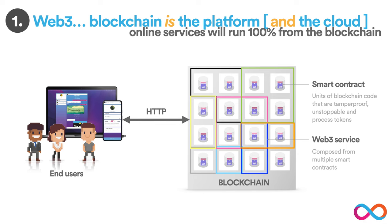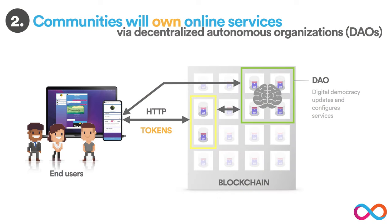Users are directly interacting on their phones or laptops with the smart contracts hosted by the blockchain over HTTP — which, of course, is very apt because this, after all, is Web3. The second important aspect of Web3 is that communities will own online services via DAOs. The smart contracts making the service are circled with a yellow line, and the smart contracts making a DAO are circled with a green line. Users are now interacting with both, and tokens have entered the game.